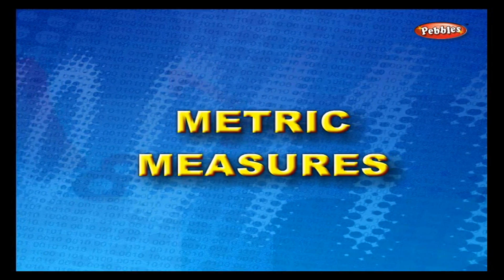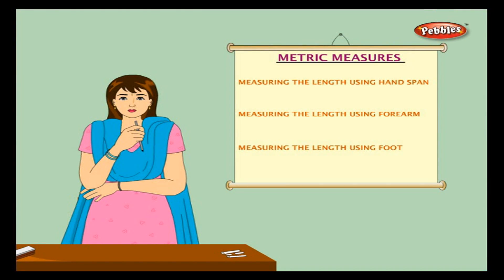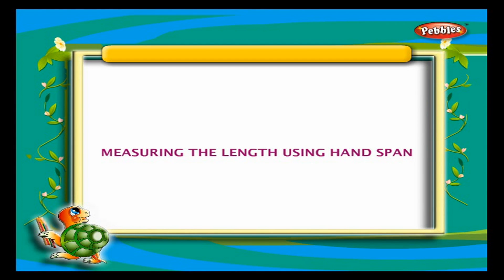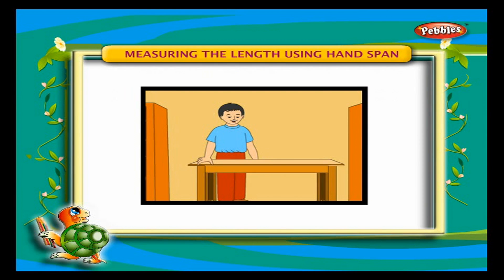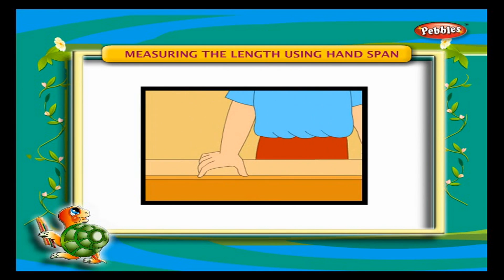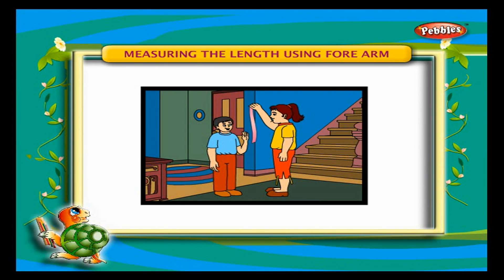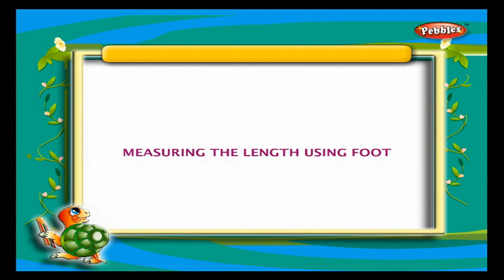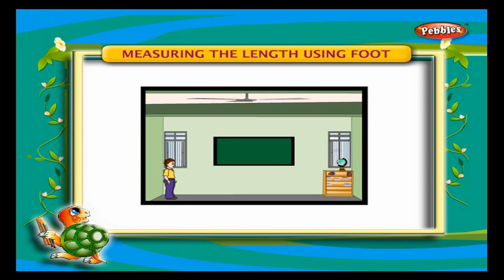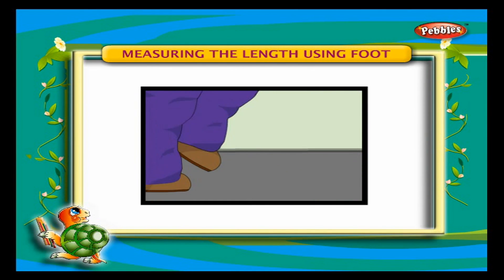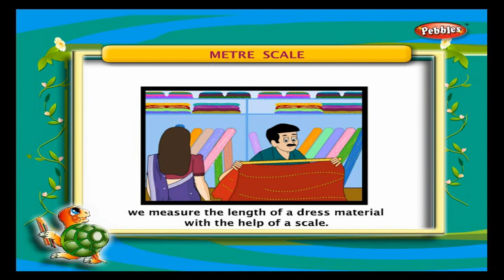We use different measures for different types of products. We can use a hand span to measure a table or a box. We measure a ribbon or a blackboard using a cubit. Using foot or pace, we can measure the length of a classroom or a playground.